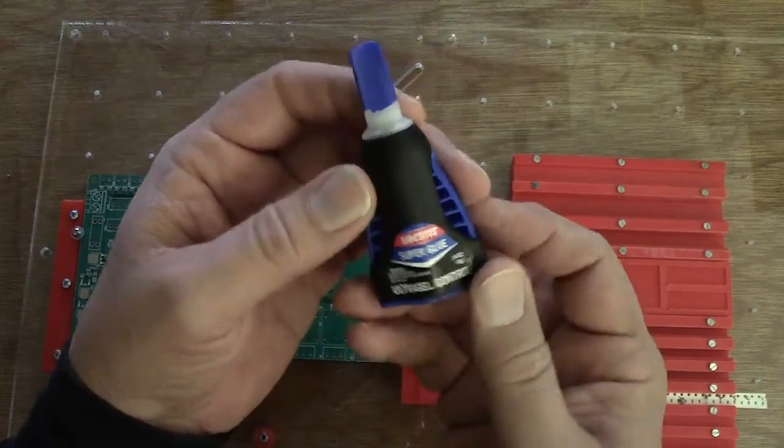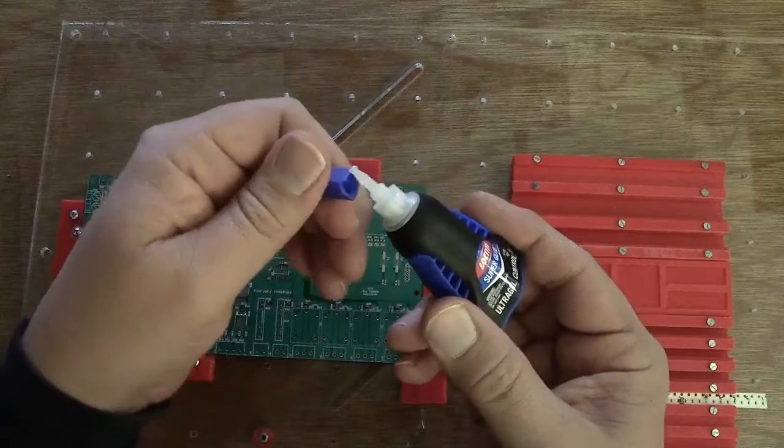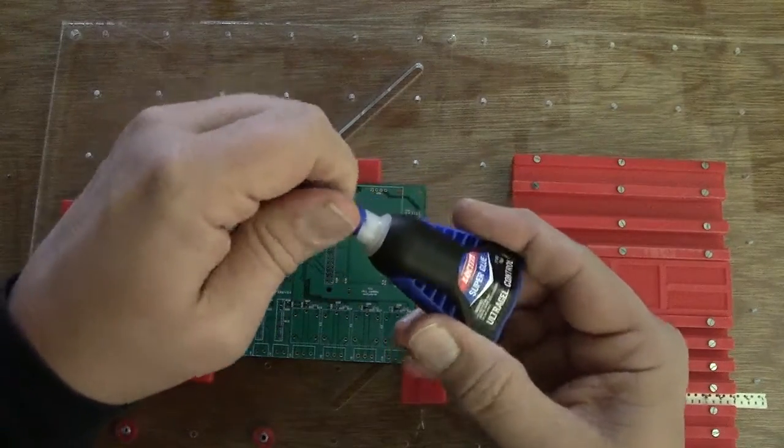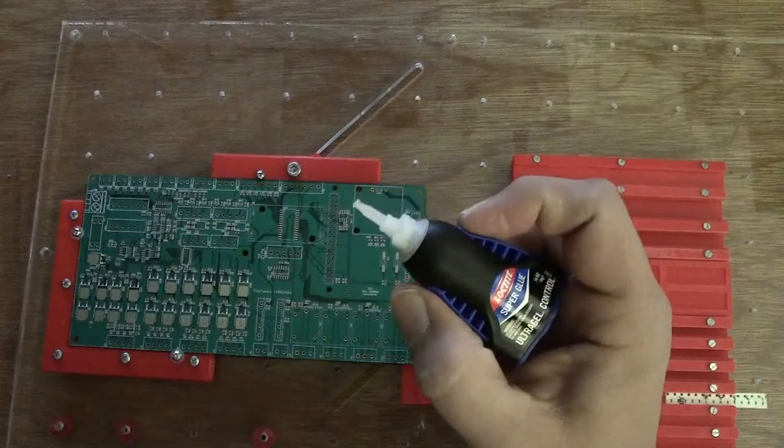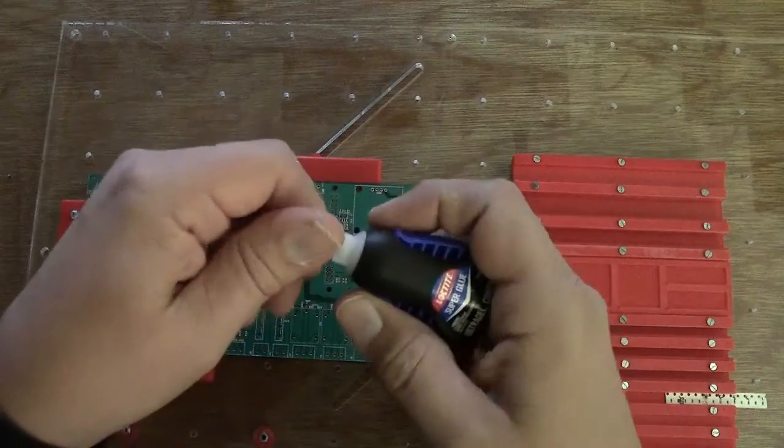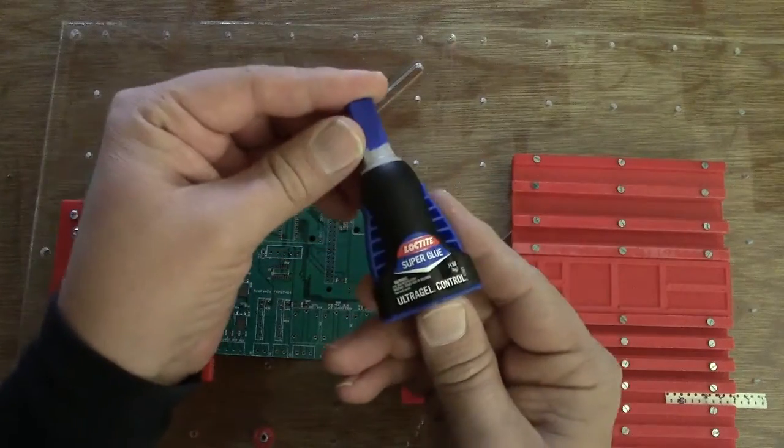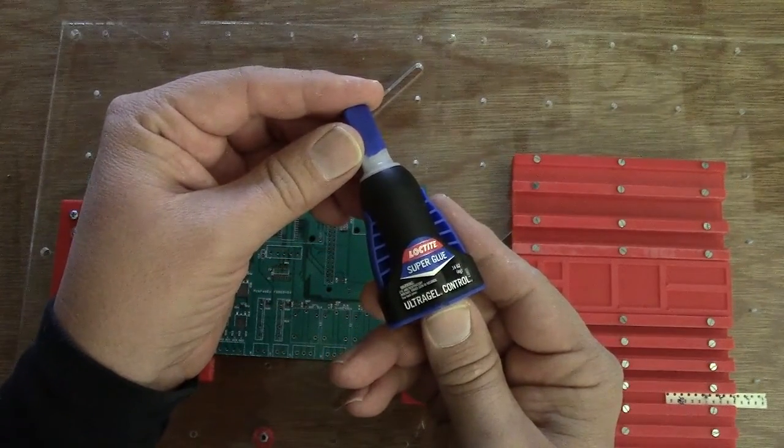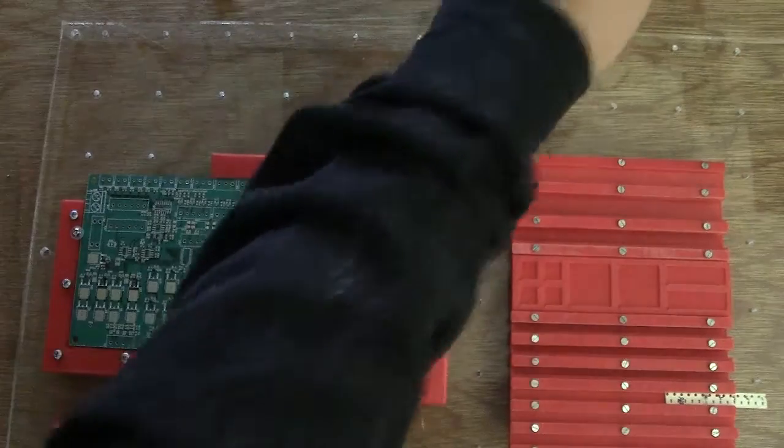One last thing here, I've been using this. I'm going to give a shout out to Loctite for this version of super glue called Ultra Gel. This stuff is excellent. The lid comes off all the time, it doesn't stick on there. It has a nice mechanism where you actually squeeze the bottle with those blue handles. You can get super precise. It doesn't run, it's more like a goo, and it works pretty well.